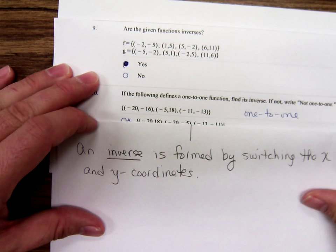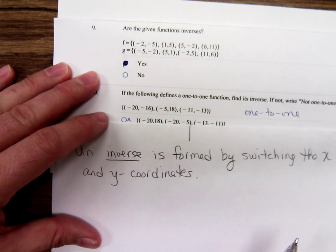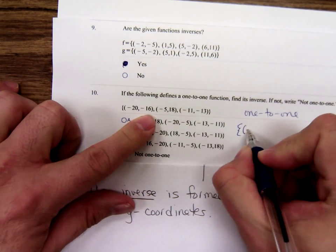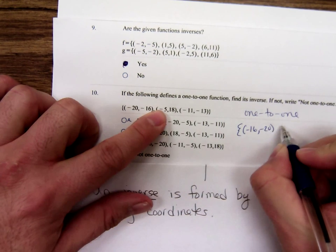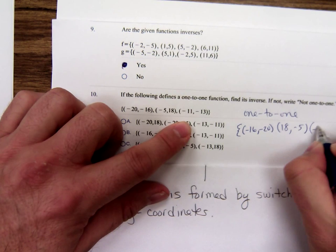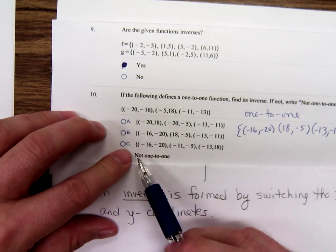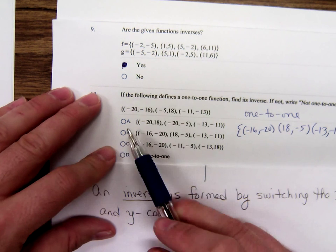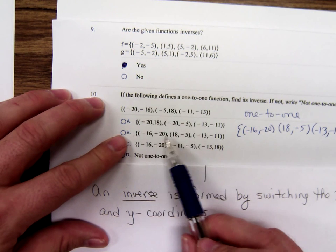Since it's one-to-one, find its inverse — you're just going to go through and switch the ordered pairs. Negative sixteen, negative twenty. Eighteen, negative five. Negative thirteen, negative eleven. And then look really close — B and C look sort of similar. It's B.